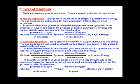Anaerobic respiration also occurs in yeast cells. Again, glucose is first converted into pyruvate in the cytoplasm in the presence of oxygen, just as in the previous cases. Then this pyruvate enters the yeast cell where, in the absence of oxygen, it is converted into ethanol, carbon dioxide, and energy is released. The fate of glucose is asked many times in board examinations, so you should understand it properly.